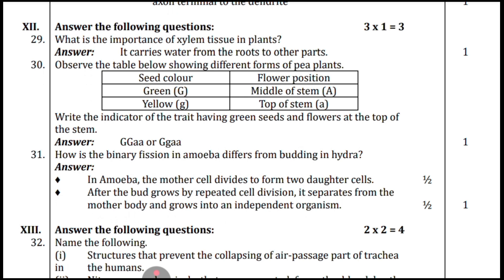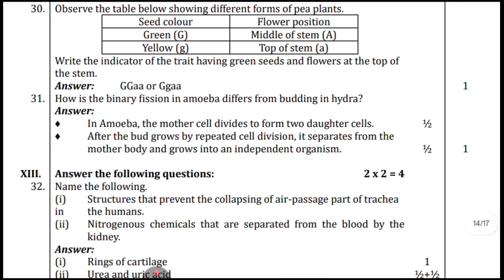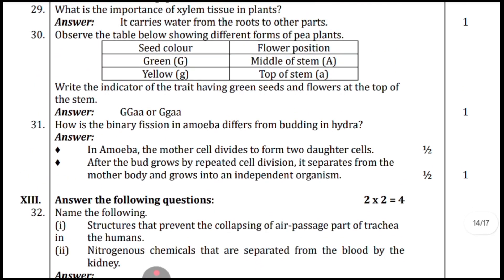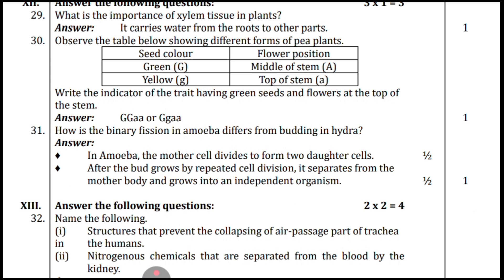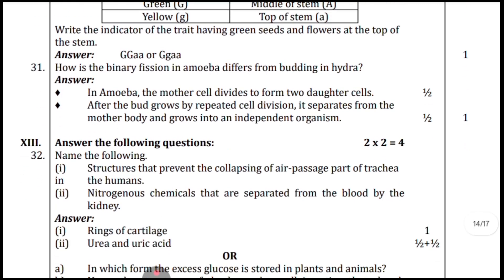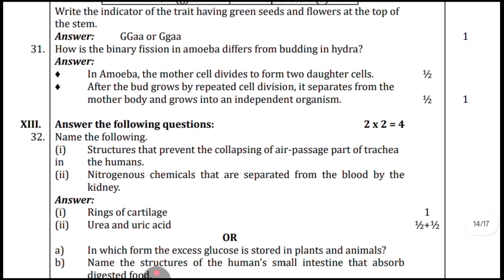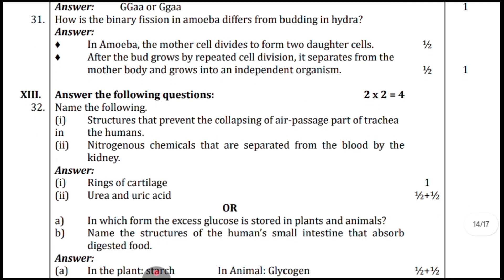Question thirty: observe the table showing different forms of a pea plant. You should write the genotypes as GG, Ga, Gg, or aa correctly. Question thirty-one: how does binary fission in amoeba differ from budding in hydra? These are the two points, each carrying half a mark.